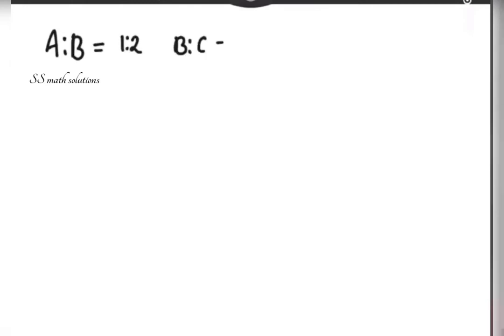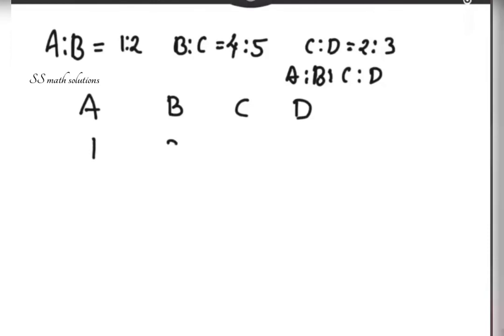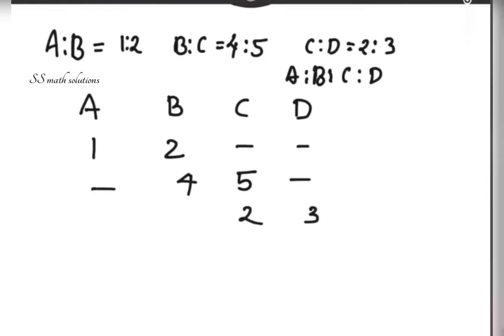Let's check one more. a is to b is equal to 1 is to 2, b is to c is equal to 4 is to 5, and c is to d is equal to 2 is to 3. Very easy. So we arrange a, b, c, and d: a is to b is 1 is to 2, b is to c is 4 is to 5, c is to d is 2 is to 3.